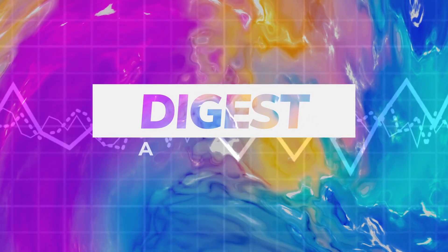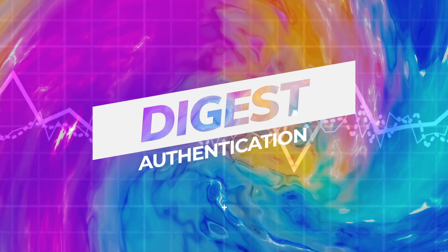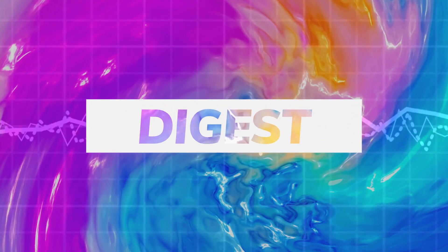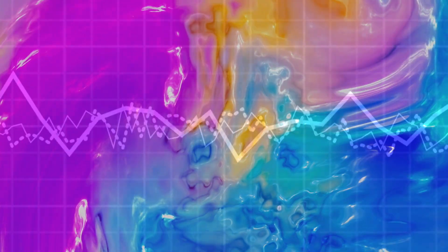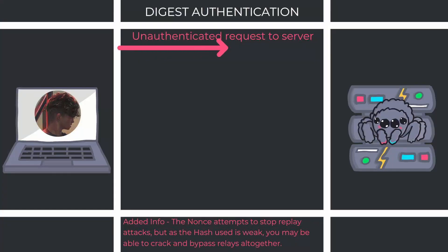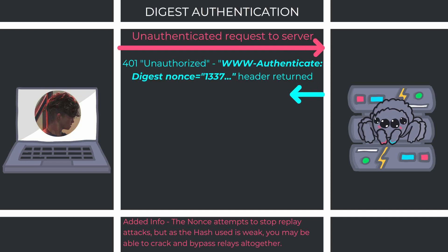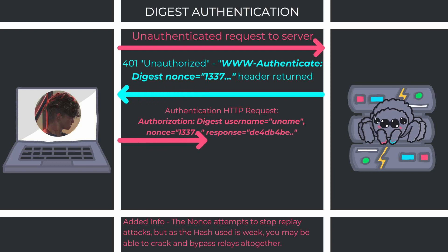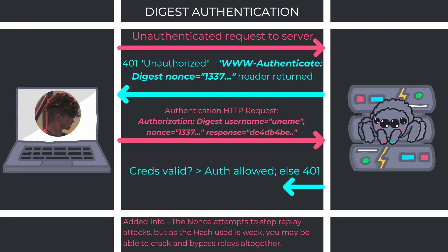Next, let's take a look at digest authentication, which is very similar to basic authentication but uses hashing instead, and has a nonce applied to hinder replay attacks. The client makes an unauthenticated HTTP request to the server. The server responds with a 401 Unauthorized and tells the client to use digest authentication, along with some parameters to stop replay attacks such as a nonce. The client then provides the username and password in digest hash format. Following accepted credentials, the server responds with authenticated content.